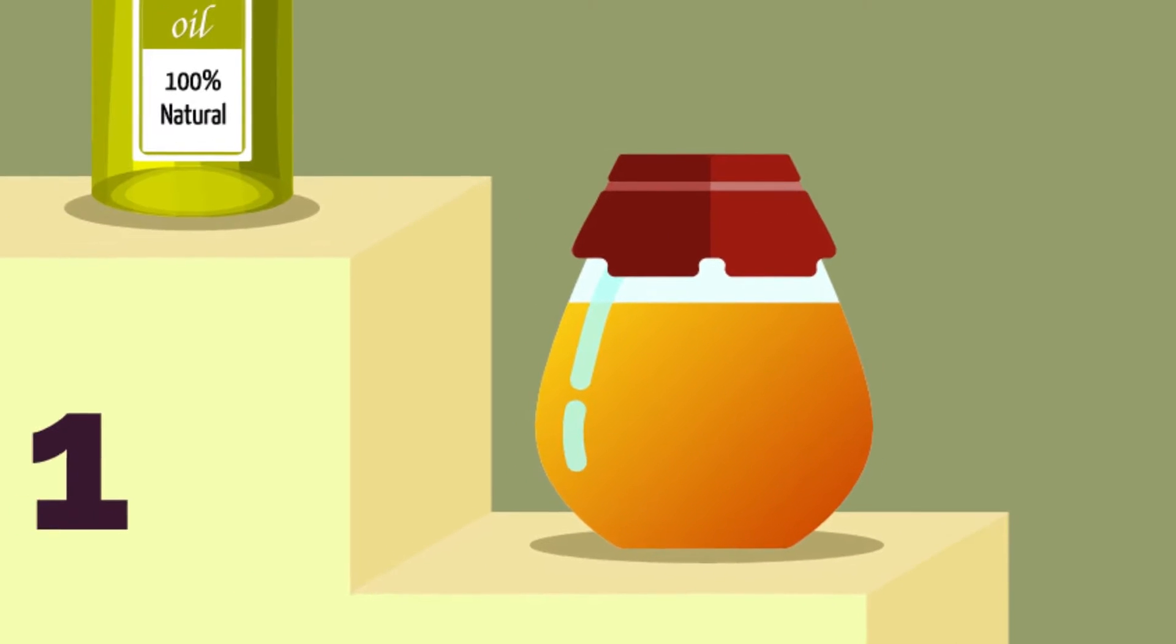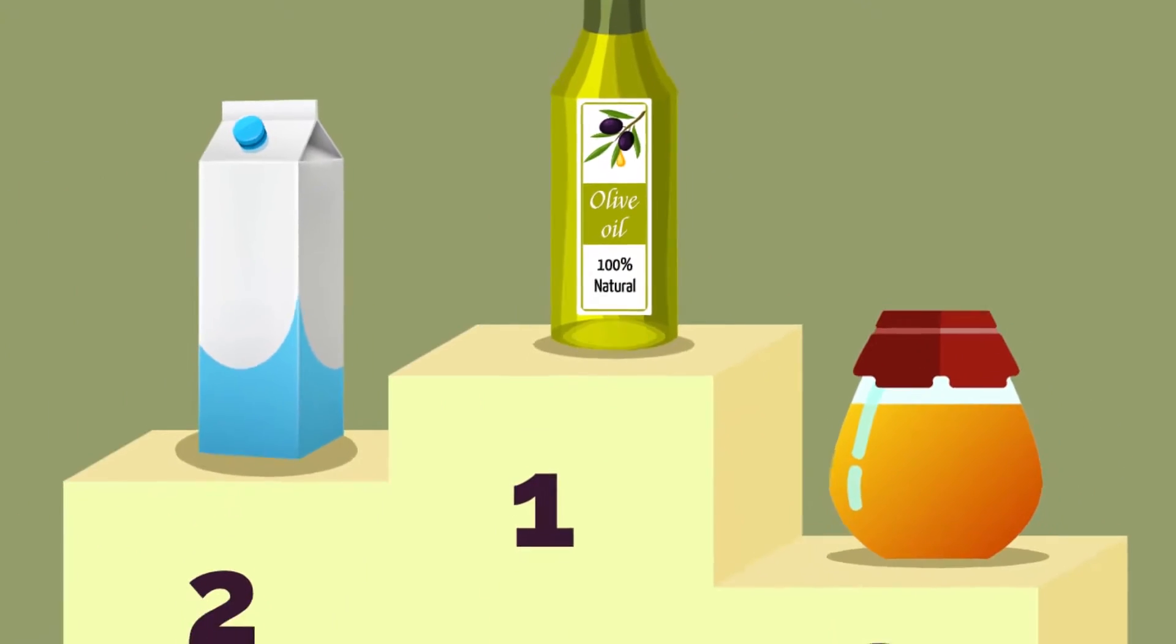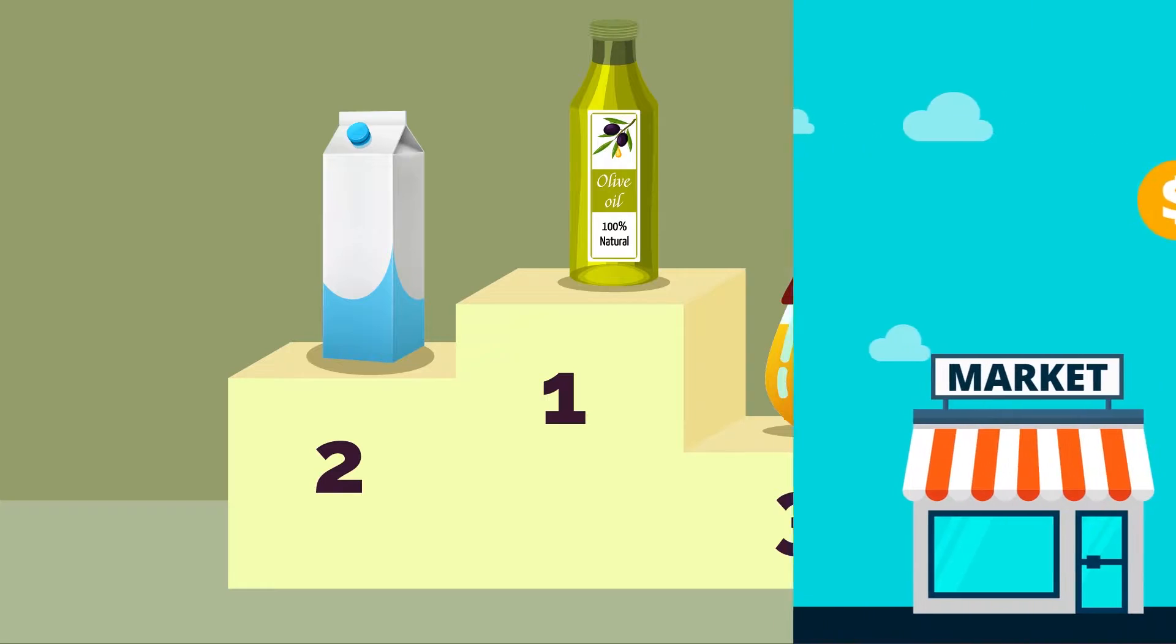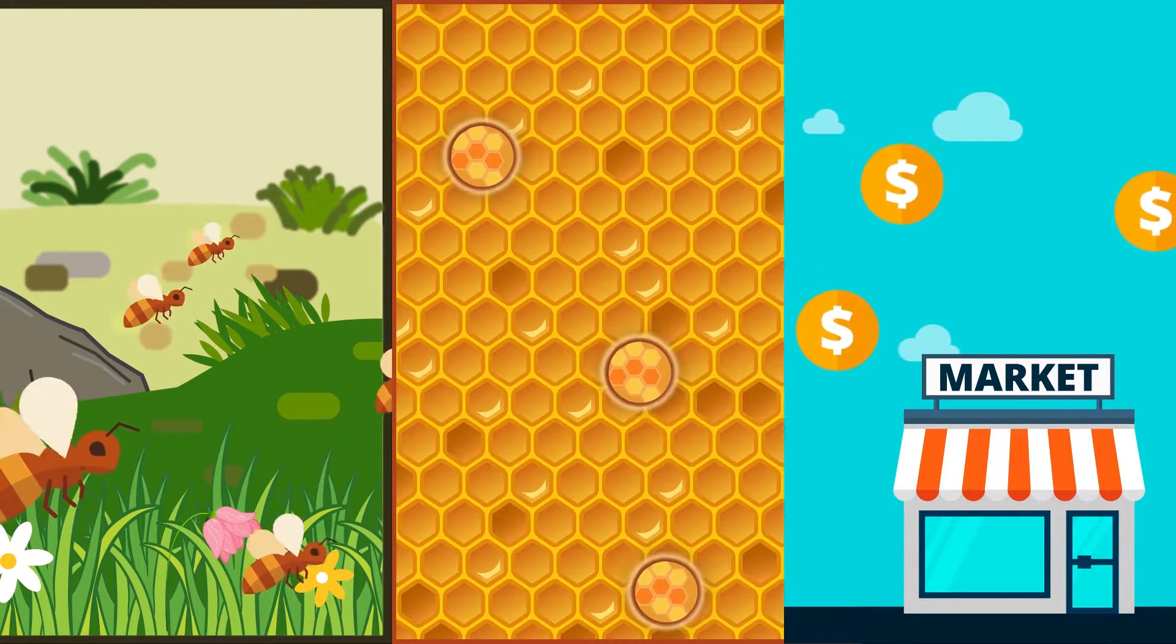Honey is said to be the third most adulterated food product along with coffee, seafood, milk, and olive oil. It takes a lot of bees to produce honey and because of this, honey is quite expensive.